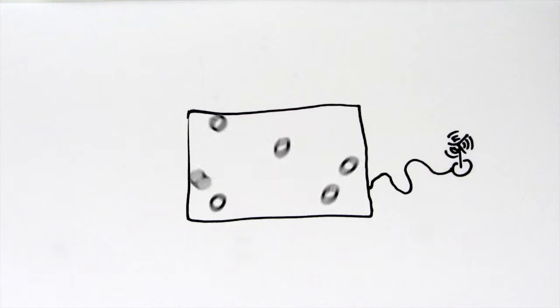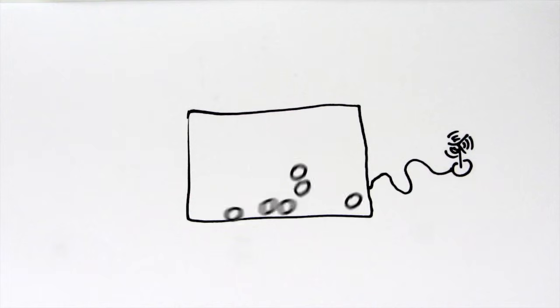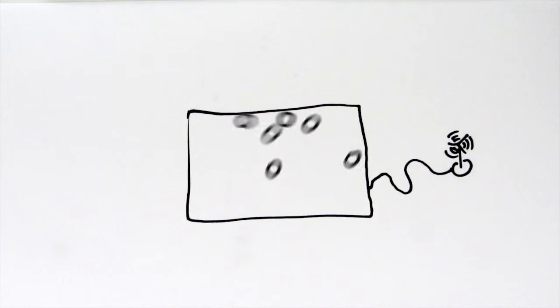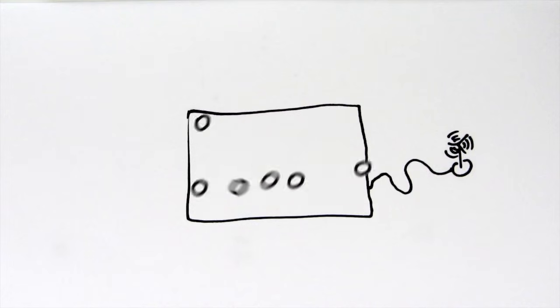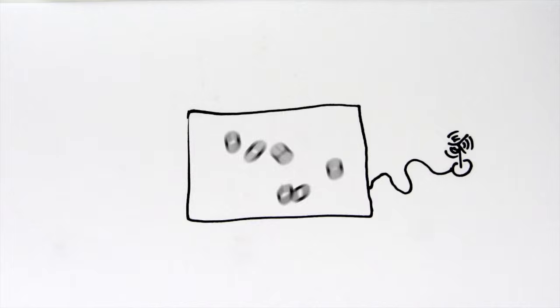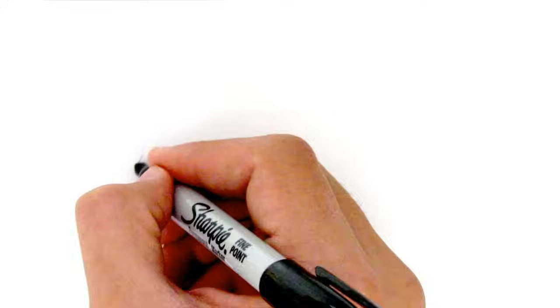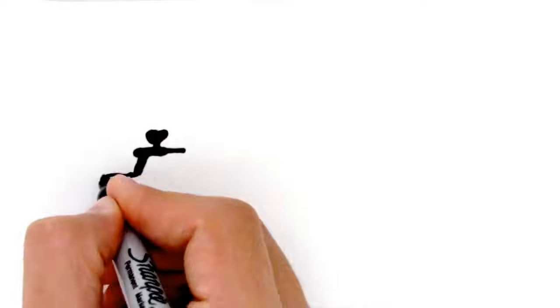Gases have a lot more energy and move about the container very quickly, and unlike solids and liquids, they can be compressed, because there is lots of space for the particles to move into. Which is how a paintball gun works — by compressing the air very closely inside a tank and releasing it in a short burst to propel the projectile onto someone's backside. Ouch.